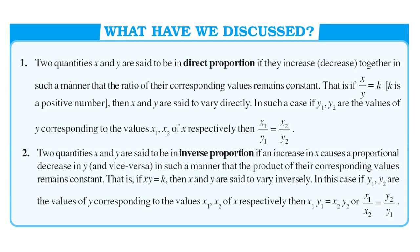So what we have discussed, two quantities x and y. They are in direct proportion if they increase or decrease together in such a manner that the ratio of the corresponding value remain constant. It is x by y will be equal to k. Then x and y are said to be varying directly. So in this case, if y1, y2 are the values of y corresponding to x1 and x2, the ratio will be x1 by y1 will be equal to x2 by y2.